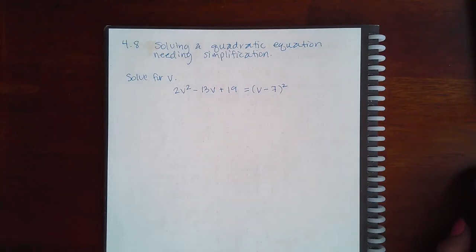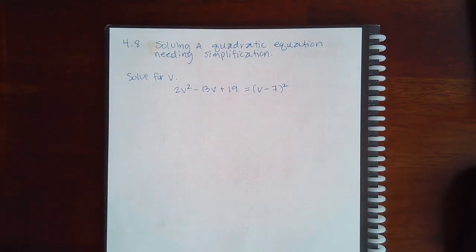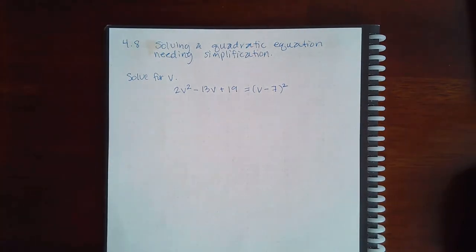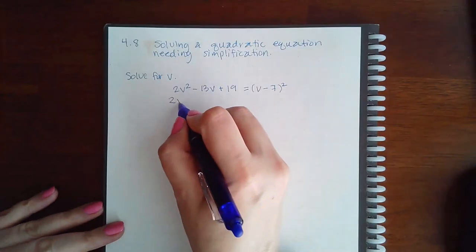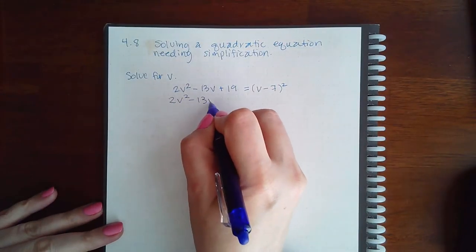This is 4.8: solving a quadratic equation needing simplification. To solve for v, we definitely need to get it equal to 0, and before I can do that, I actually have to square that other side.